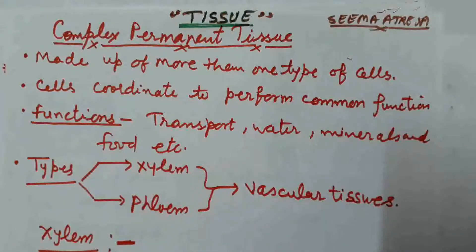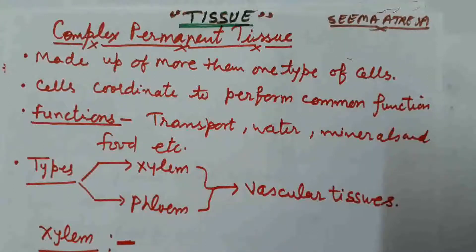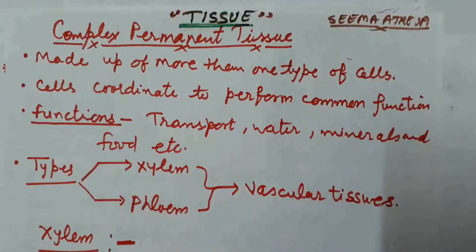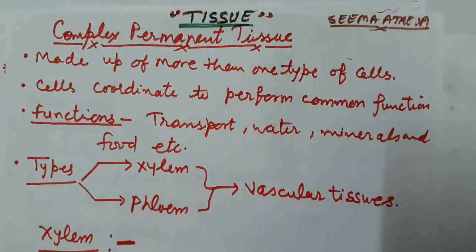What do you mean by complex permanent tissue and their types? Complex permanent tissue is made up of more than one type of cells. In simple permanent tissue there is only one type of cell, whereas complex permanent tissue is made up of more than one type of cells, and these cells coordinate to perform a common function.